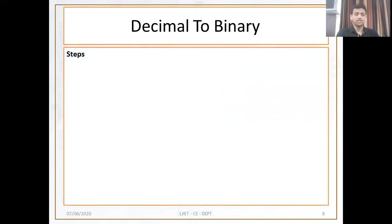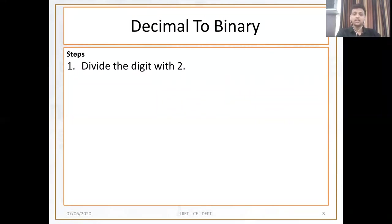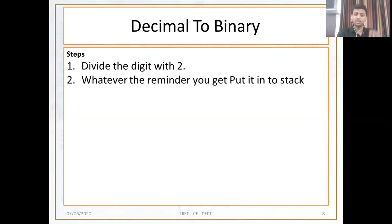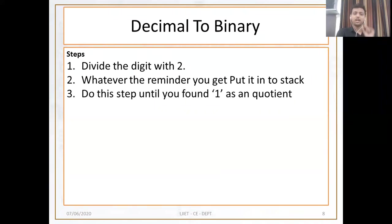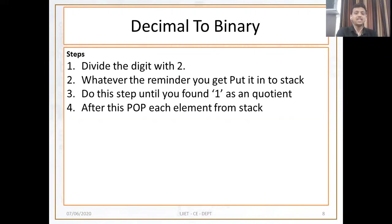The first steps: how can we convert our decimal number into binary numbers? First, you need to divide any decimal digit by 2. Whatever remainder you get, put that remainder inside the stack. Do this step until you find 1 as a quotient. After this, pop each element from the stack and append it in the answer string.